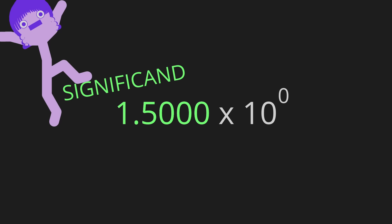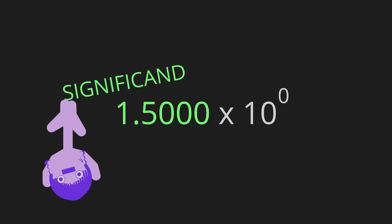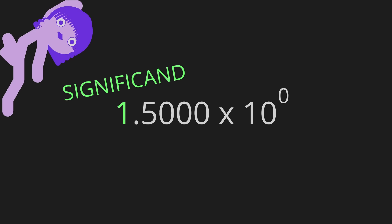The significand is this part to the left, which is just a normal number. There is one important constraint we need to keep in mind here. With scientific notation, there's always just one digit to the left of the decimal point. There are several reasons for this, none of which are super important right now, but this constraint is actually the very thing that will let us trick a computer into storing a fraction, so it's worth keeping in mind.